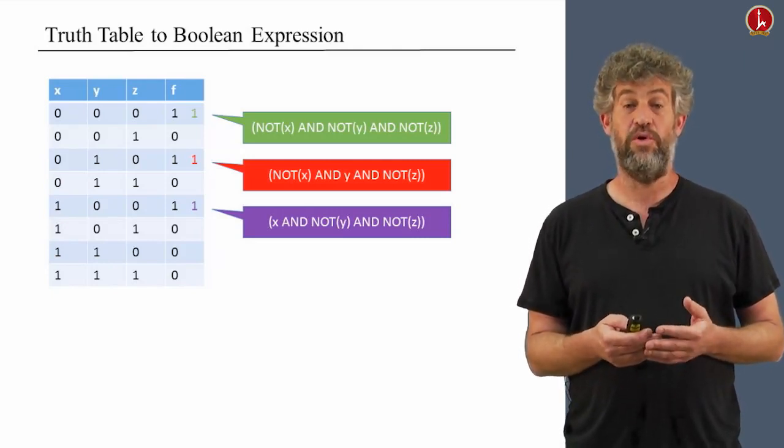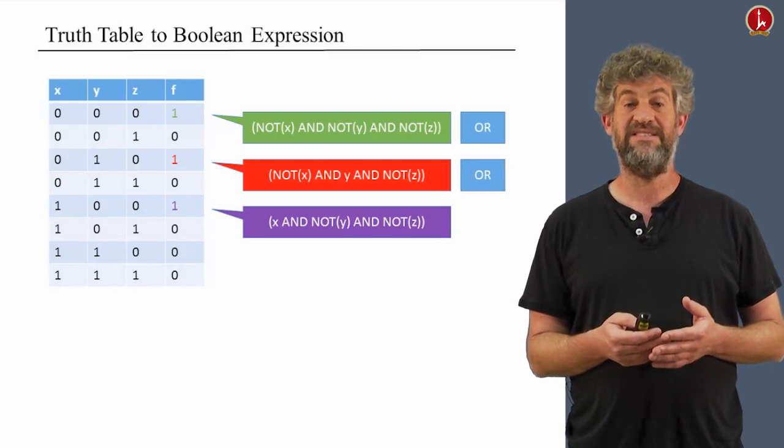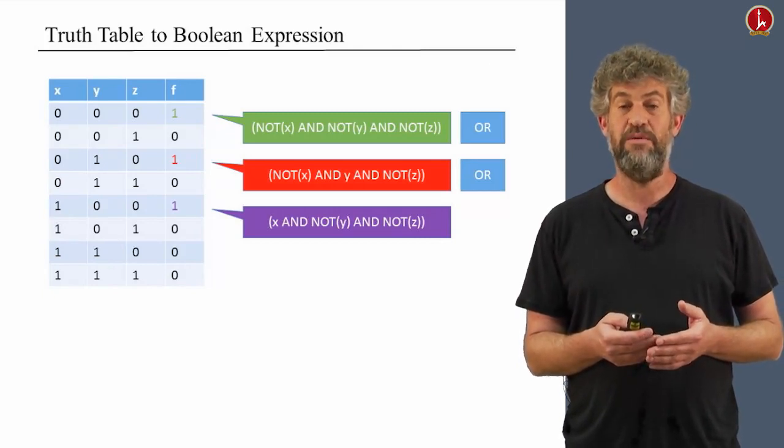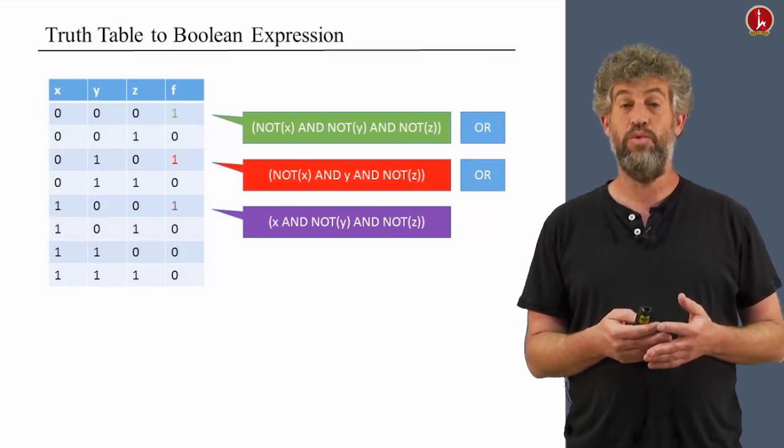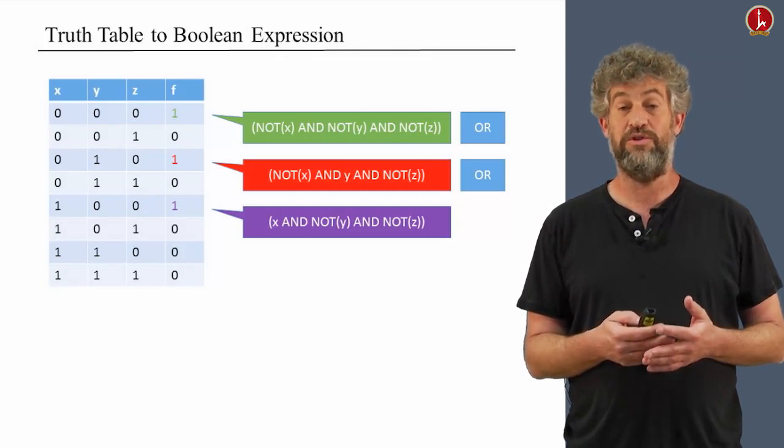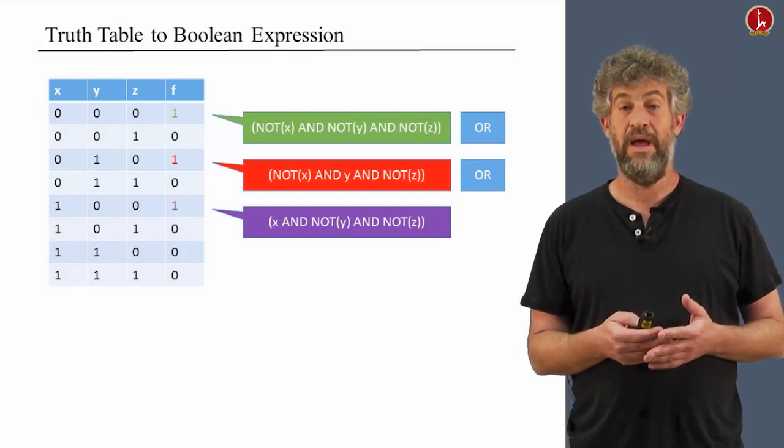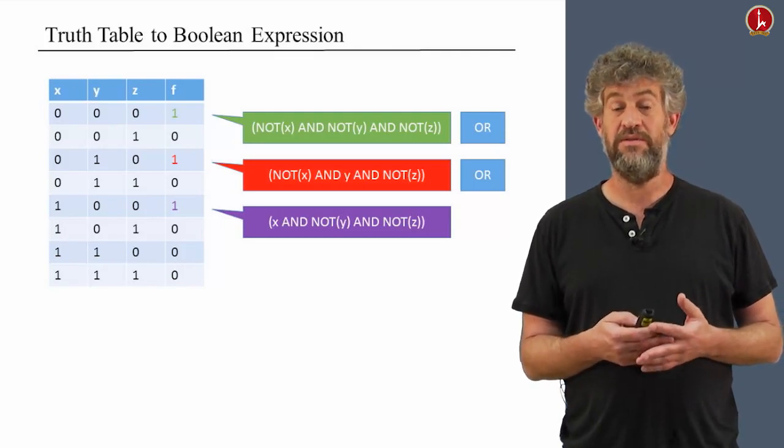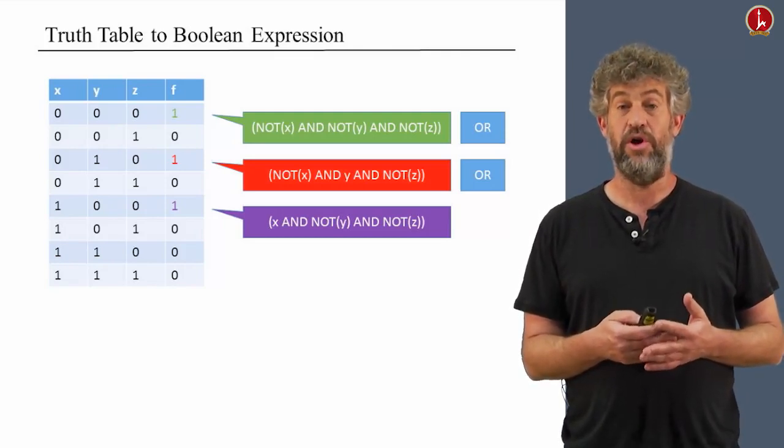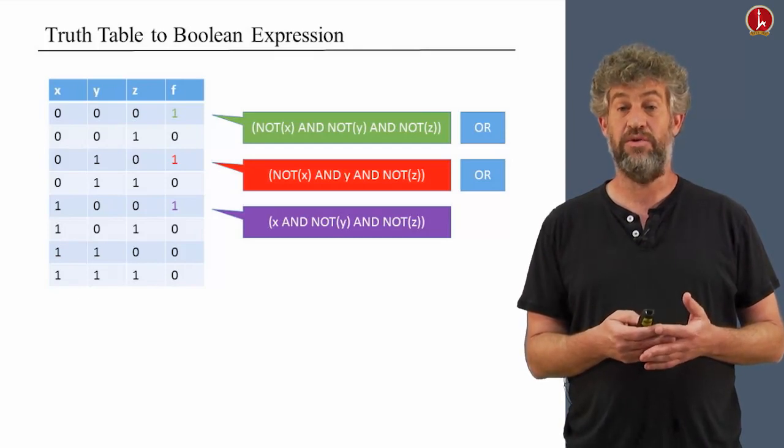Well, that's very simple. We just OR them together. And now we get a single expression, a single Boolean function, that gets value 1 exactly on the rows for which we built clauses for, and gets 0 everywhere else. And now we've basically constructed our function as a Boolean expression, only using ands, nots, and ors.